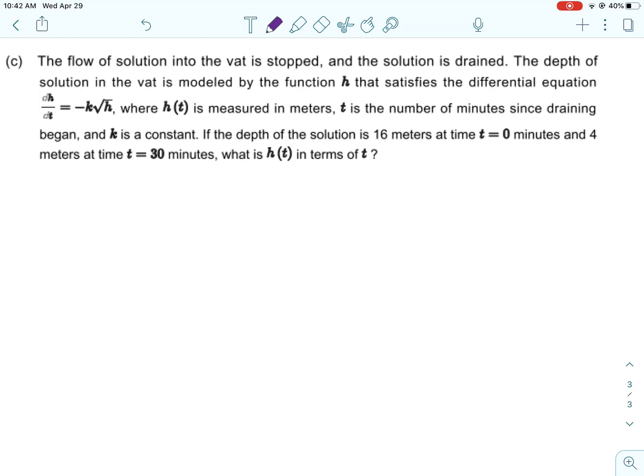So let's look at this last one. The flow of solution into the vat stopped and the solution is drained. The depth of the solution in the vat is modeled by the function H that satisfies a different differential equation: dH/dt equals negative K times the square root of H, where H of t is measured in meters and t is the number of minutes since the draining began, and K is a constant. If the depth of the solution is 16 meters at time 0 minutes and 4 meters at time 30 minutes, what is H of t in terms of t?